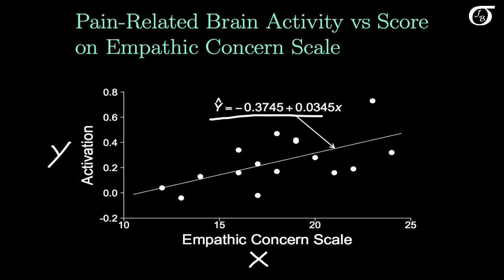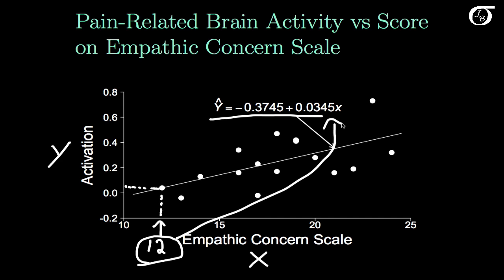Suppose there was a different woman — one who was not one of these 16 women in the data set — and we knew that her score on the empathic concern scale was 12, and we wanted to predict her activation level. We could simply go from 12 up to the line and read off our predicted value of y. That would also be the estimated mean of y at x equals 12. To find either of those, we simply substitute this value of x into our least squares regression line.